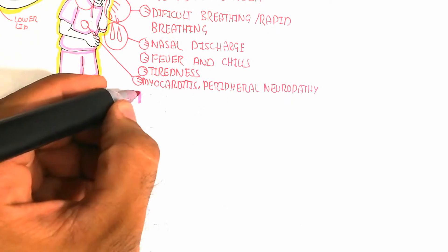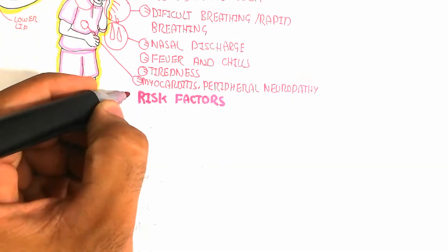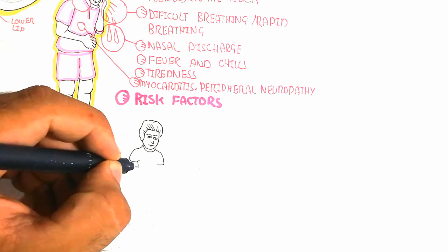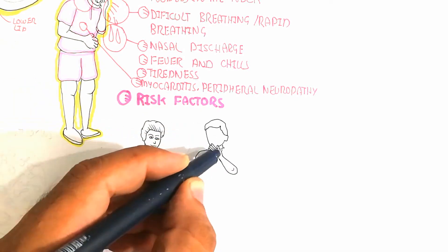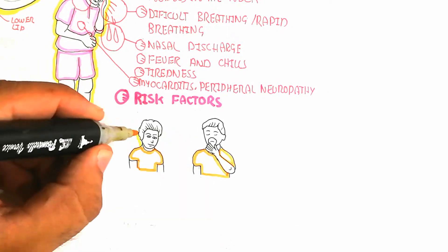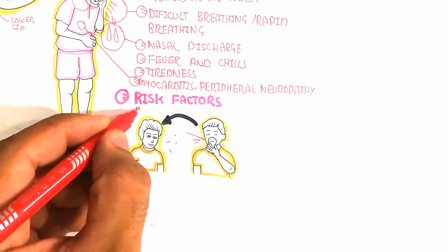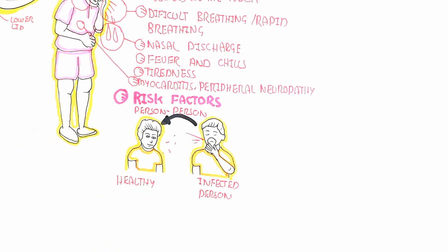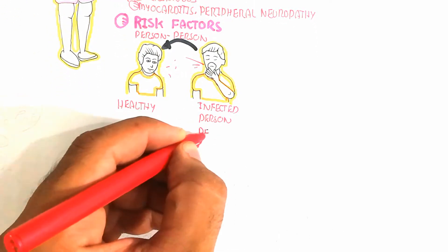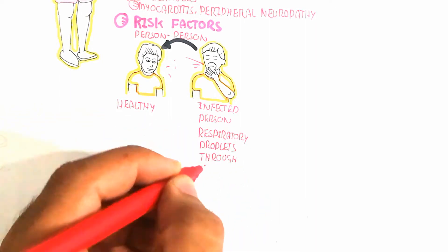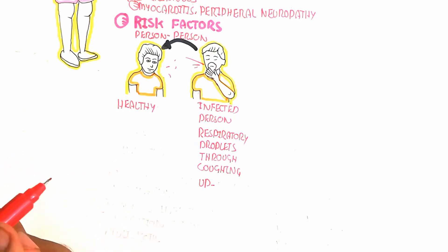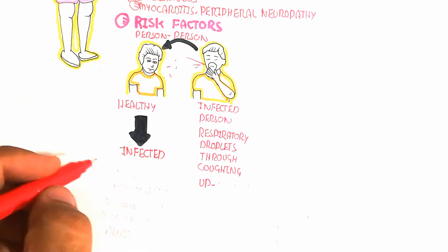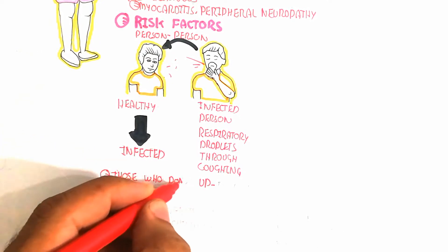Peripheral neuropathy is a serious complication of diphtheria due to bacterial infection. The risk factor is person-to-person contact — even during talking — where an infected person releases respiratory droplets through coughing, which target a healthy person through the oral cavity and cause infection. This person-to-person transmission can be prevented through mask usage.